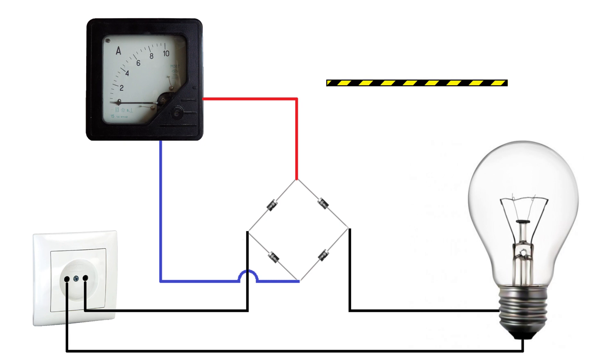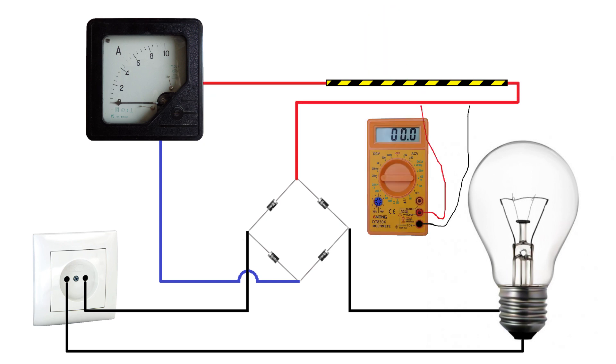Then we connect the multimeter and calibrate it. Using this method, you can measure the current strength not only of the mains voltage, but also of the converted one. Let's say it comes out of the secondary winding of the transformers.